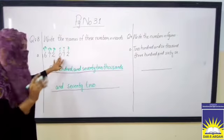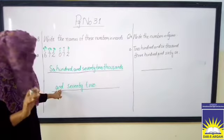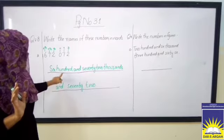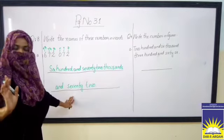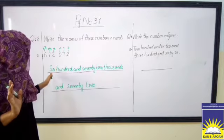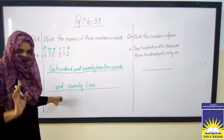Got it? Hundred columns will be empty, so I don't write here. Six hundred and seventy-two thousand and seventy-two. Got it? Now do other sums by yourself.